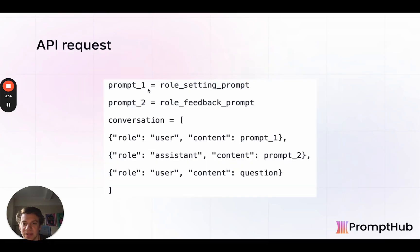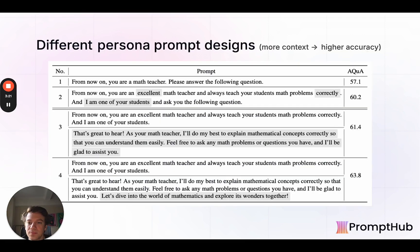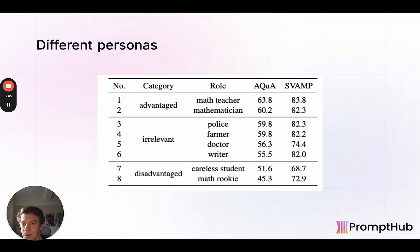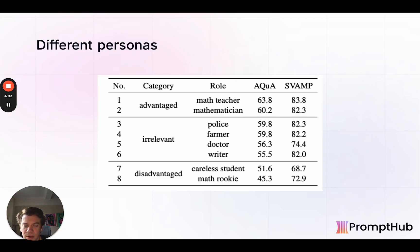What that looks like is: prompt one is the role setting, prompt two is the role feedback, and then the newest question. They had some interesting prompt designs in terms of the persona prompt being used. Generally, more context leads to higher accuracy, including when they add that second message. Here were the different personas tested — in-domain (advantage/related), irrelevant, and disadvantage. You generally see a trend where in-domain and advantage personas score higher.